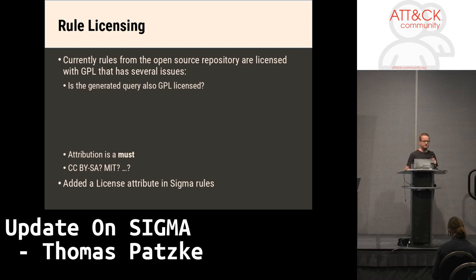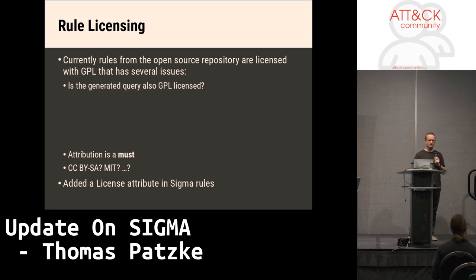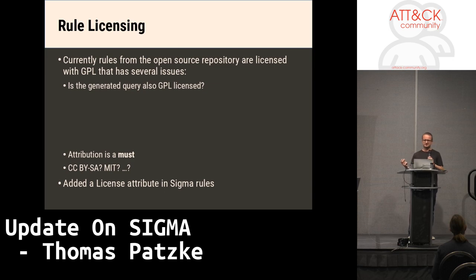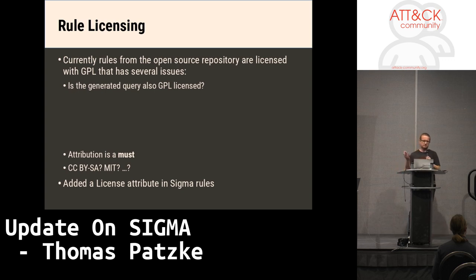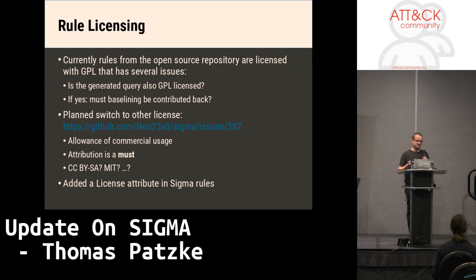Rule licensing: currently the open source repository rules are licensed with GPL. GPL is problematic because the question is whether the generated query from a GPL rule is also GPL. This could mean that when you take the query and baseline it specific to your environment, you'd have to contribute your baselining back to the repository — which makes no sense because it's specific to your environment and you don't want to expose your infrastructure publicly. So: must the baselining be contributed back? This is one significant problem.